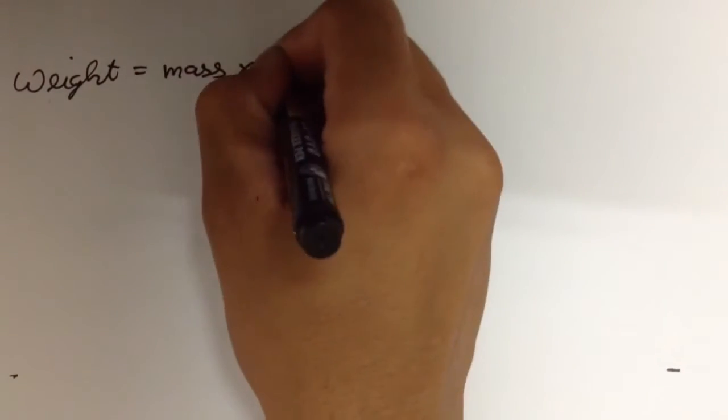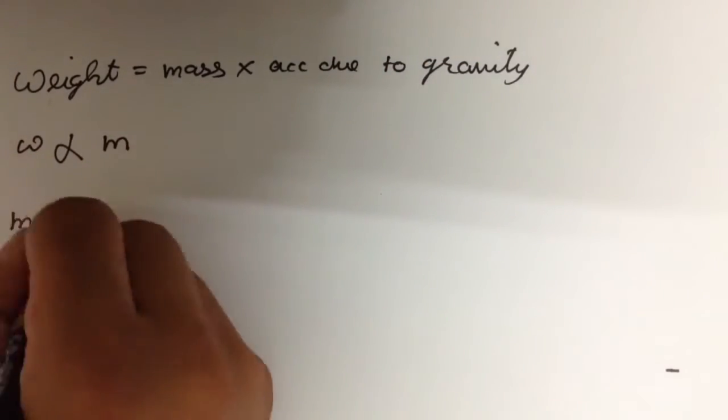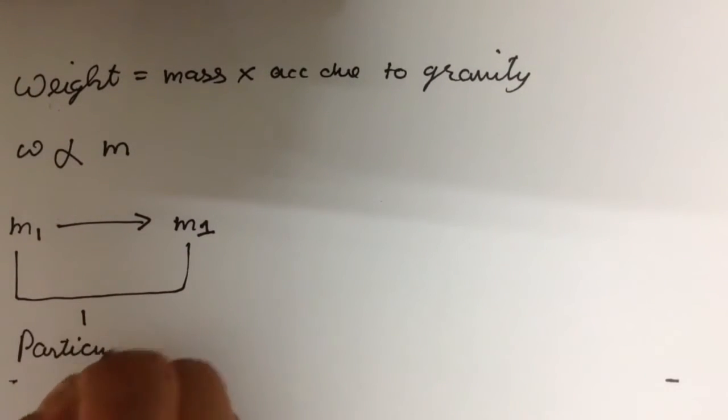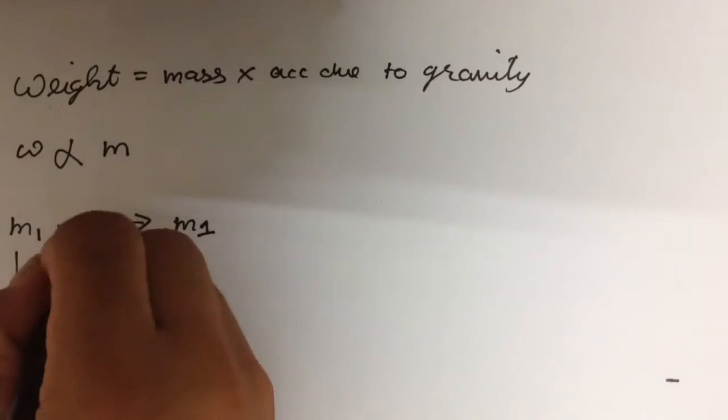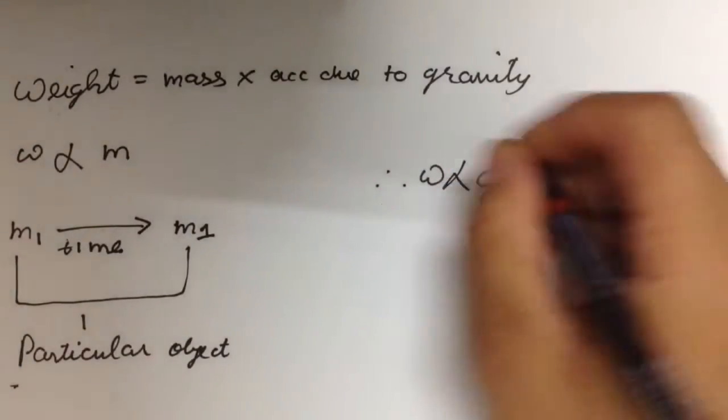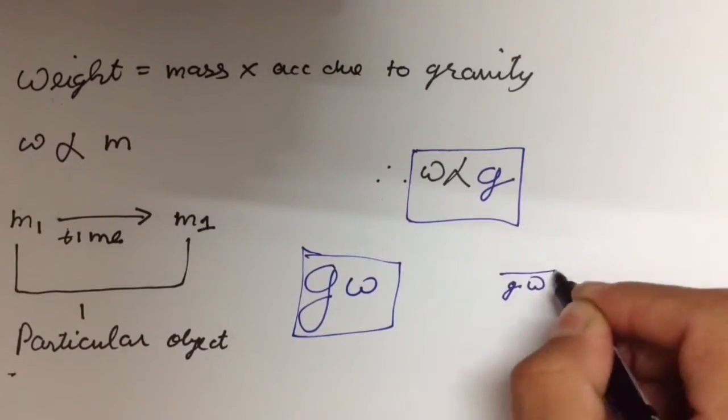Weight is equal to mass times acceleration due to gravity. This implies that weight is directly proportional to mass. But since mass for a particular object remains same over time, weight largely depends upon acceleration due to gravity, that is g, and is directly proportional to it. When g is more, weight is more. When g is less, weight is less.